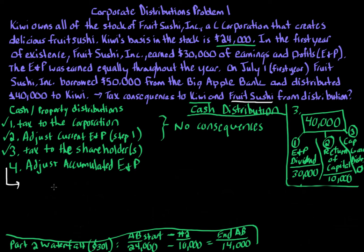The purpose of step four is to calculate the accumulated E&P at the end of the year so we can start the next year with the correct accumulated E&P. The accumulated E&P we started with at the beginning of this year is zero because the corporation was formed in its first year. But in year two, there will be an accumulated E&P to calculate — it could be zero or negative, but it still requires calculation unlike the year of formation where it's always zero.